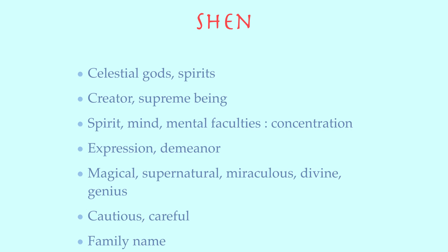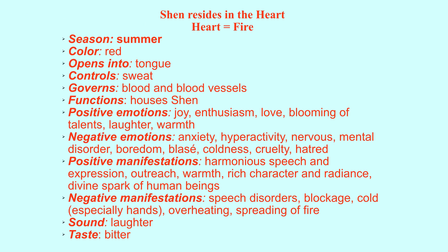Now let's look at the classical text definitions of the Shen. Number one: Shen resides in the heart. We're going to be talking a lot about heart health — please keep in mind that it also includes the radiance of the flame and therefore the candle and the flame itself. In terms of heart health, which is fire energy, its season is summer, its color is red. It opens into the tongue, so the tongue is an important tool of diagnosis of the heart, as is our expression and speech.